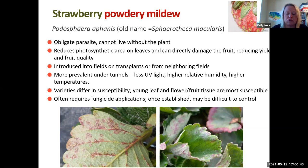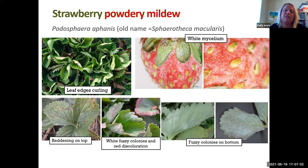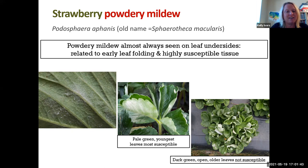The early stages of powdery mildew cause leaf curling and cupping of the leaves, which is a good indication. If you let it go too long it can impact your fruit with white mycelium. People always want to know why it occurs on the undersides of leaves first. If you watch a strawberry leaf unfurl, the part exposed to the environment is the undersides. The young succulent tissue is much more susceptible to powdery mildew than older leaves, there's less UV on the undersides, and the young leaves get inoculated by the environment as they're growing.